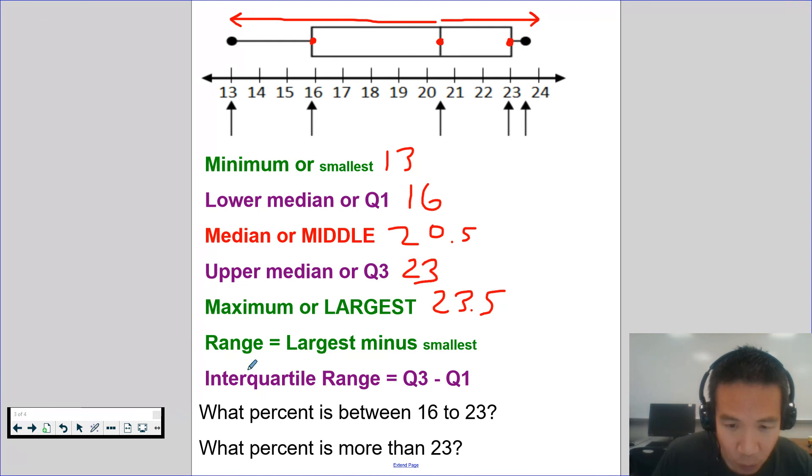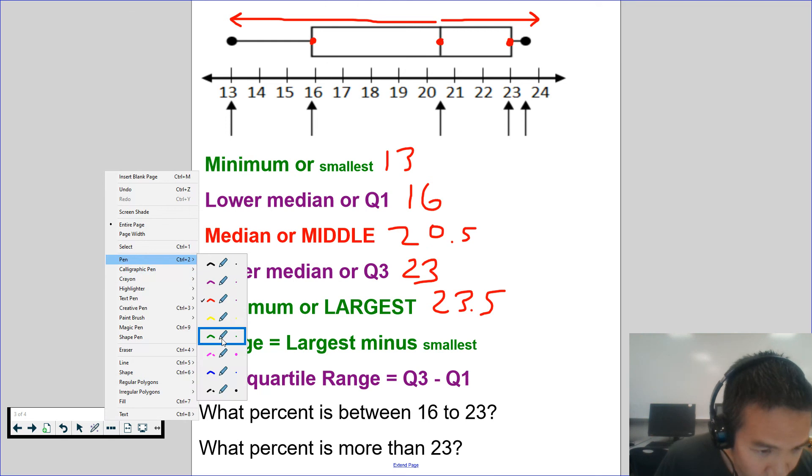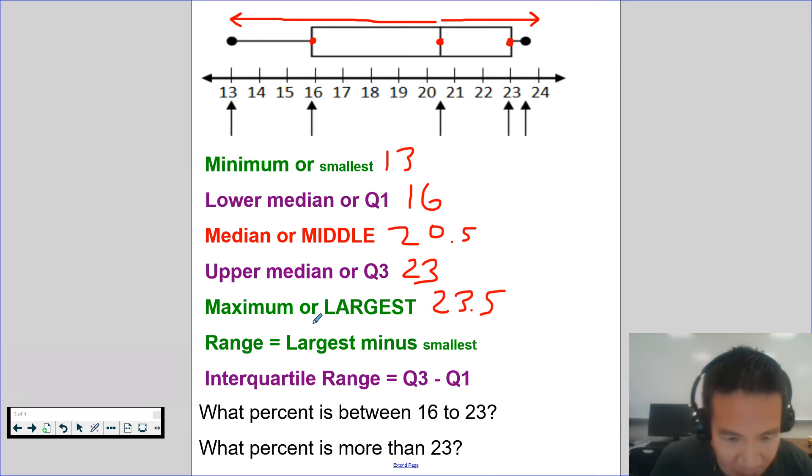Now, let me change pen color. So what is the range? It ranges from 13 all the way to 23 and a half. So 23 and 5 tenths minus 13. We're going to subtract it. Range is largest minus smallest. And 5 minus 0 is 5. 3 minus 3 is 0. 2 minus 1 is 1. So it ranges 10 and a half or 10 and 5 tenths from 13 to 23 and a half.